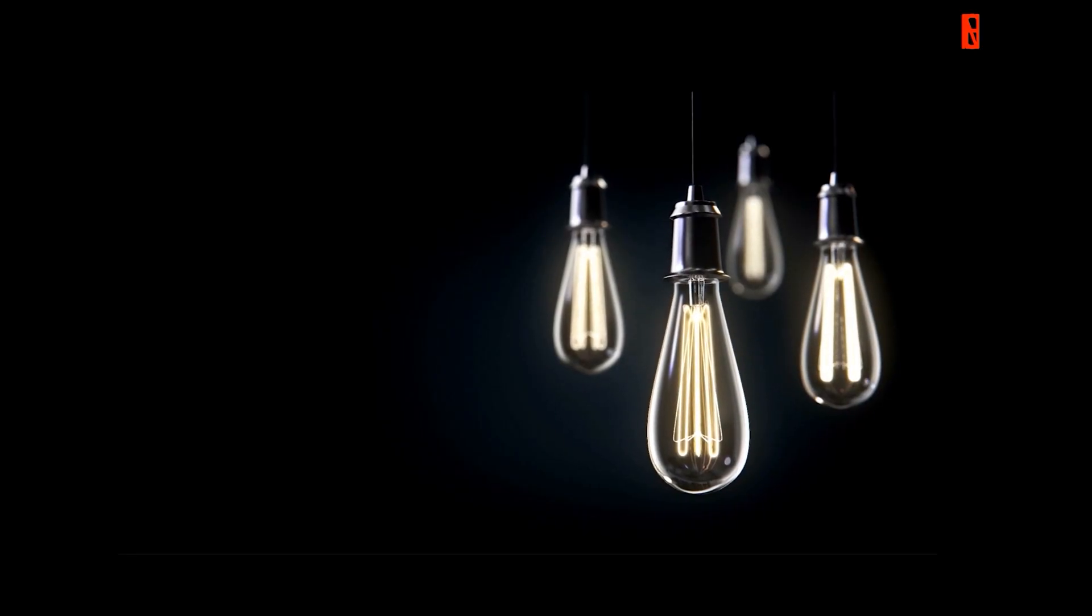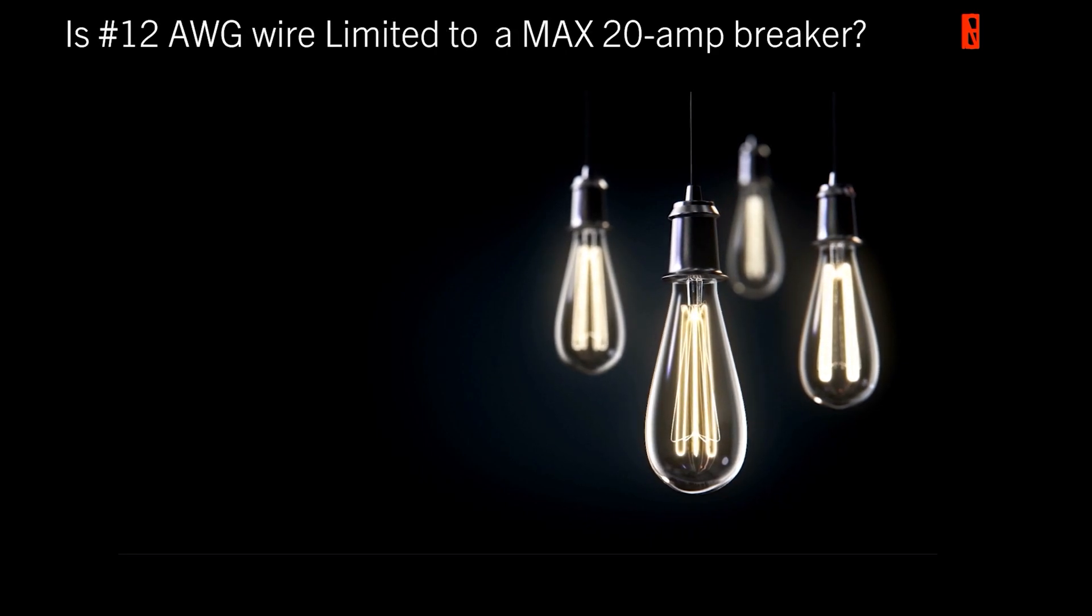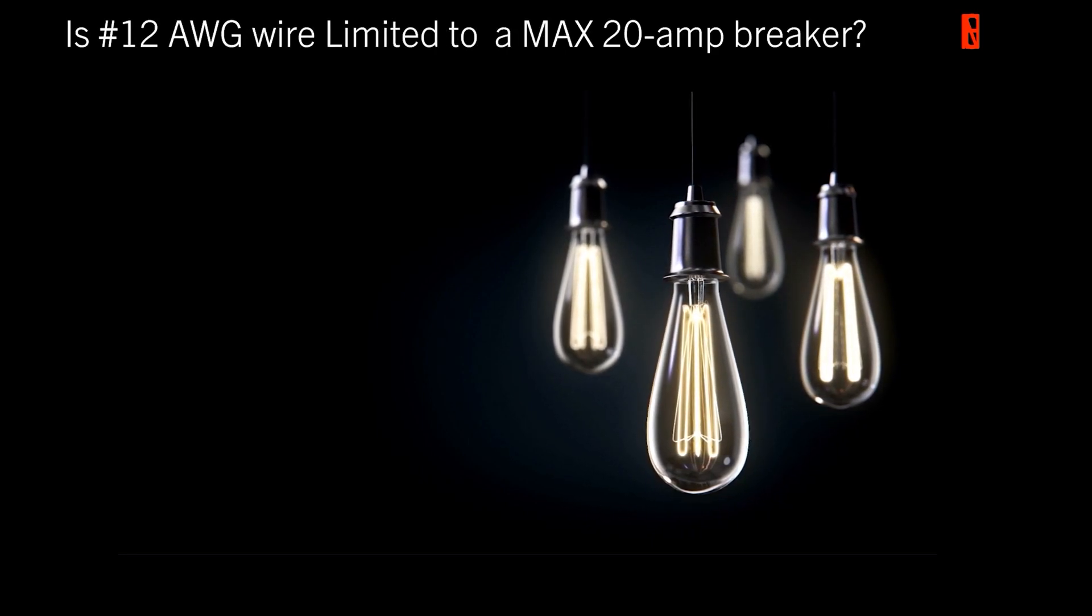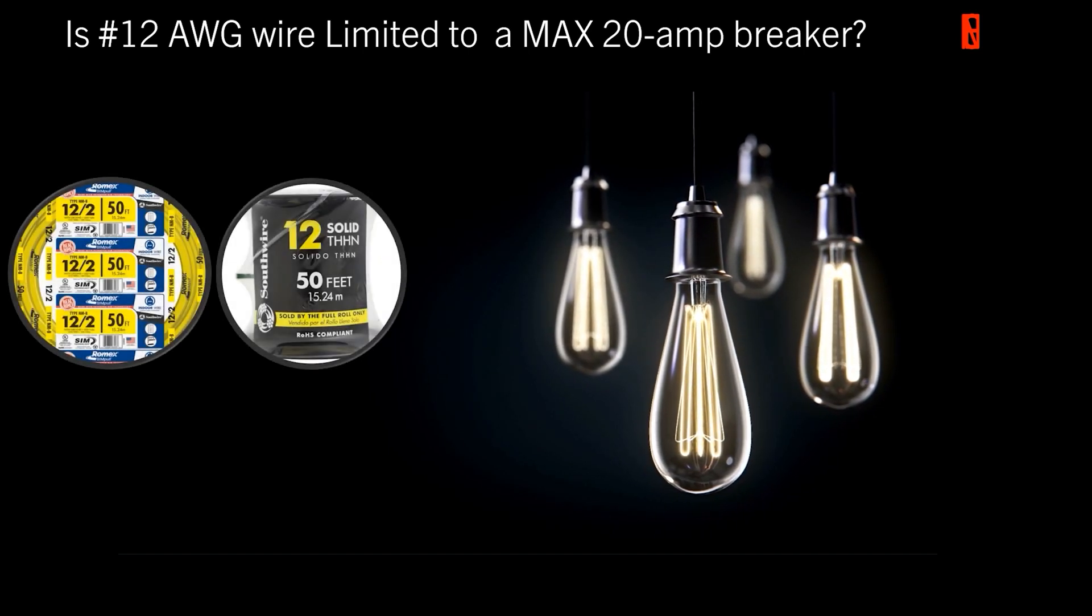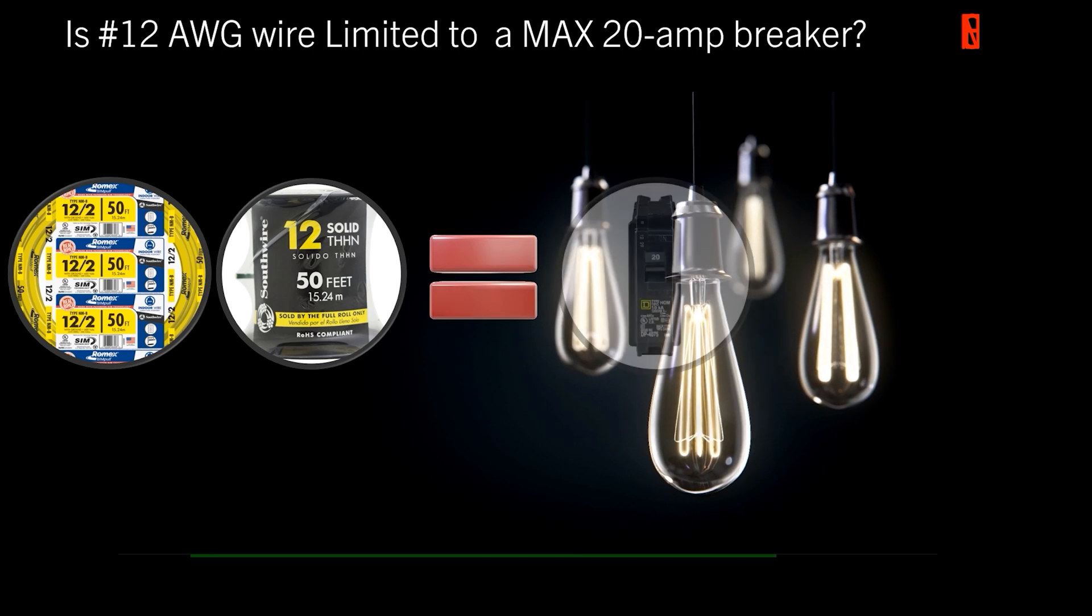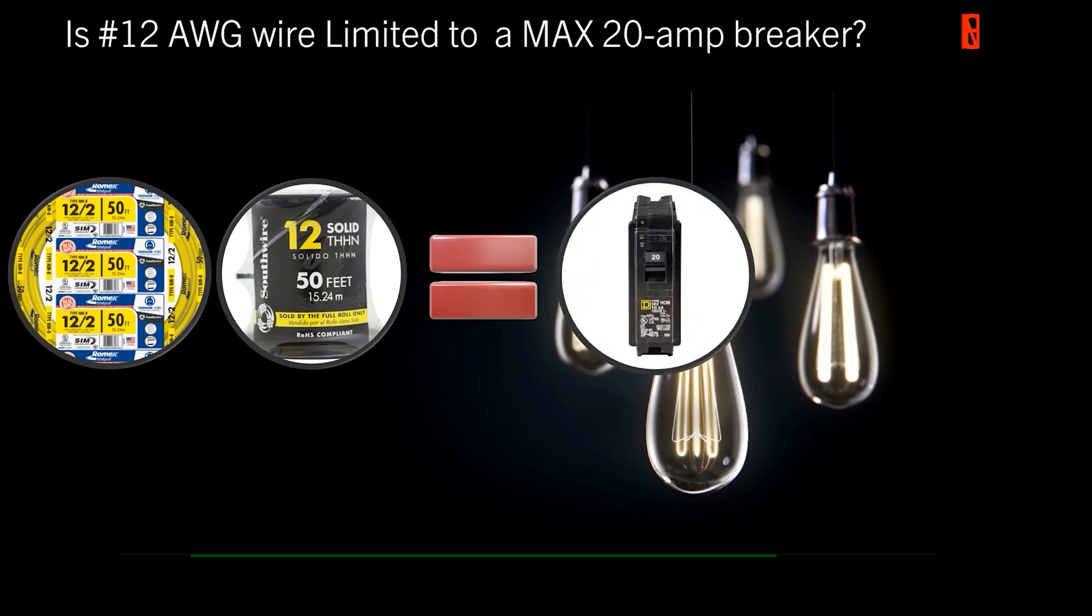All right, so let's dive right into it. Today we're going to be asking the question: is 12 gauge wire limited to a 20 amp breaker? This is what we're talking about, whether we're dealing with Romex or single strand wire. Is it required to be landed on no larger than a 20 amp breaker? Where did this train of thought come from? Is it true? We're going to break it down.